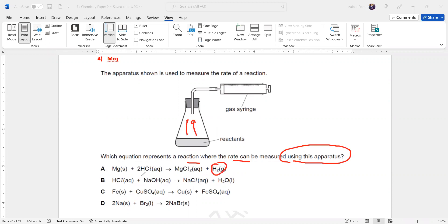So first reaction, hydrogen is a gas given out. That's why option A is the right answer. Rest all are not acceptable because there is no gas given out.